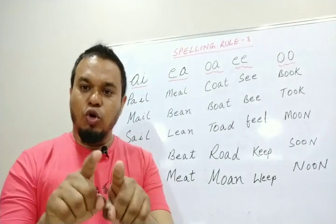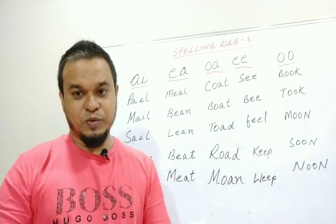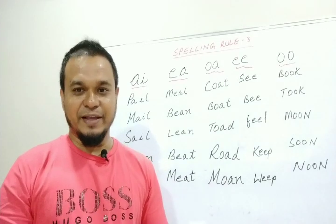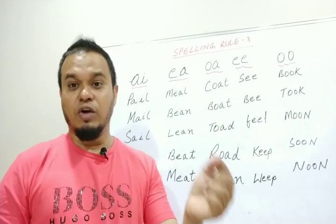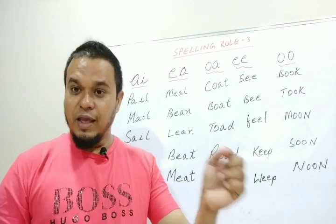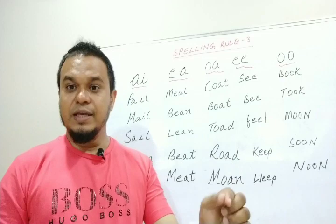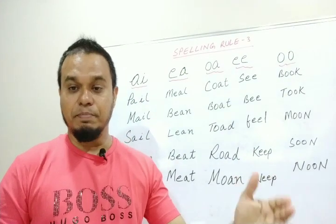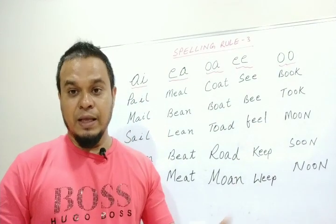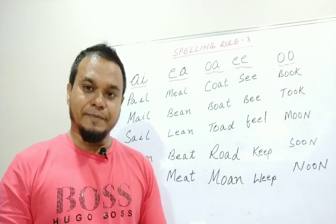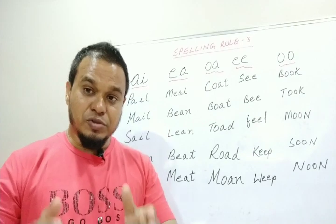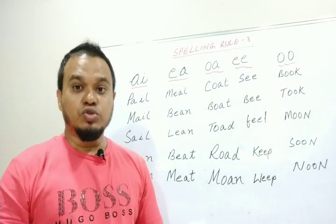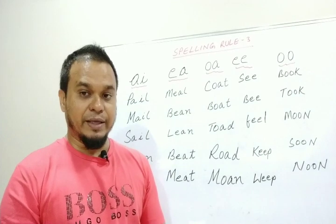When you add two vowels that come together, you will be able to read them. The vowels are A, E, I, O, U. When they come together, you will be able to read them. Today I will teach you what happens when you add two vowels that come together.